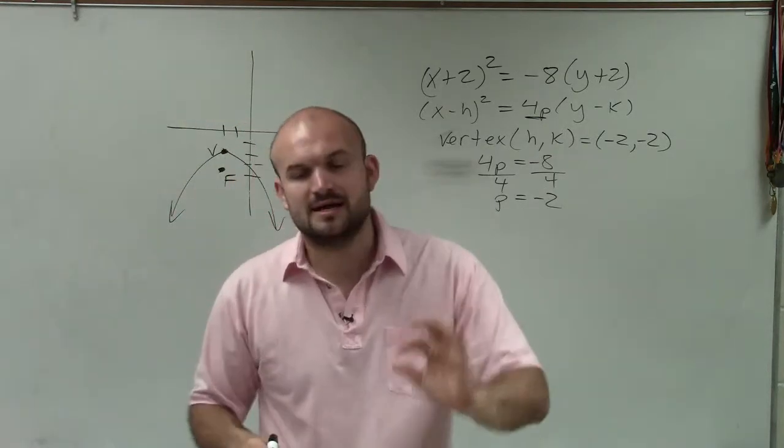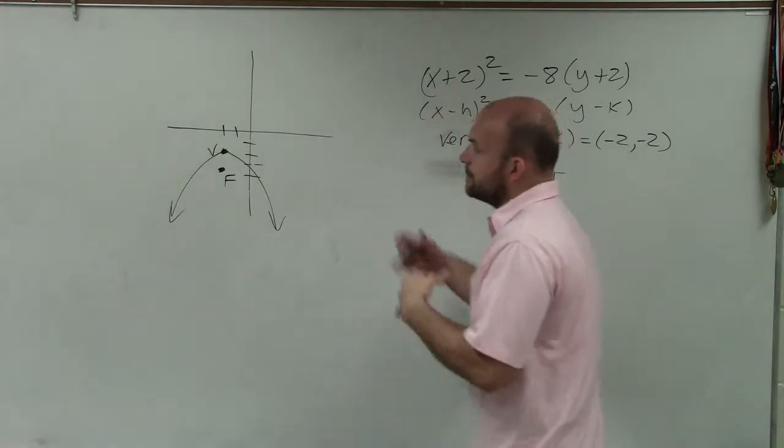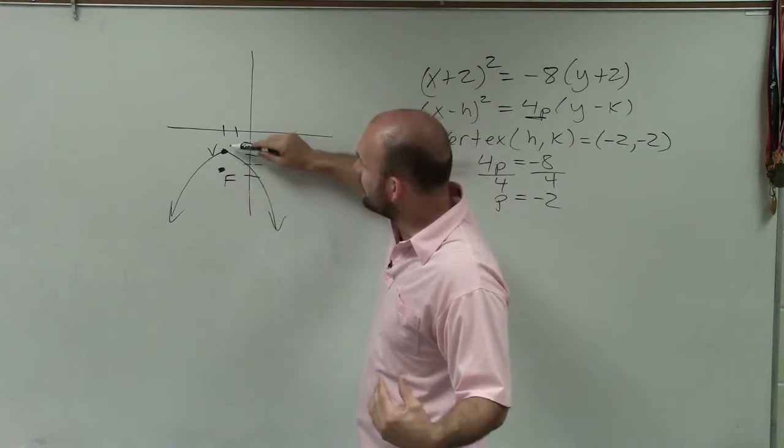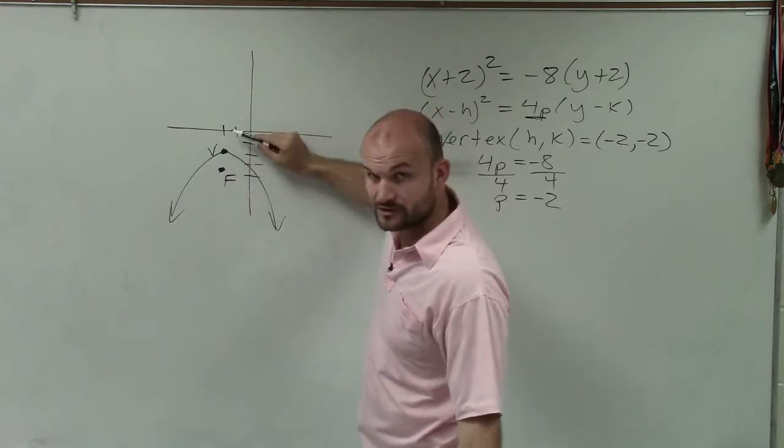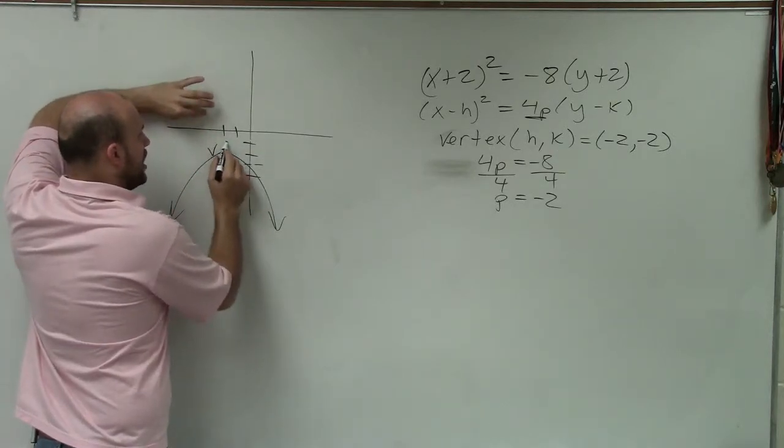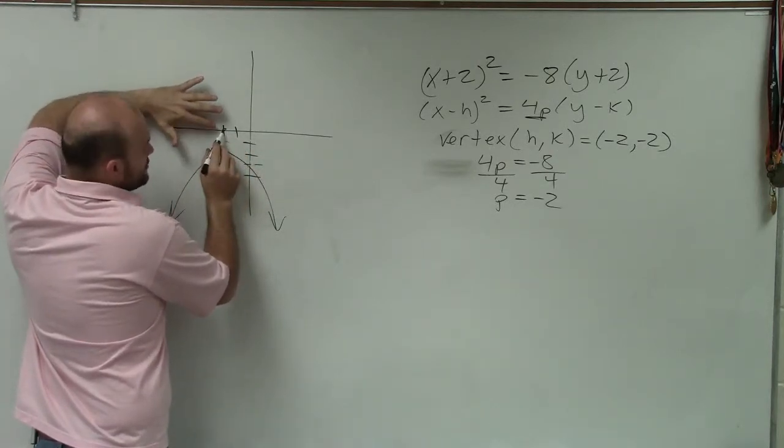Now, to determine the directrix, the absolute distance from the vertex to the focus is the exact same as the distance from the vertex to the directrix. So therefore, all I need to do is go up two units. And there's going to be my directrix.